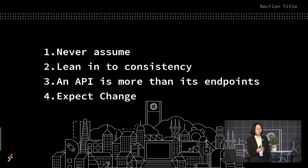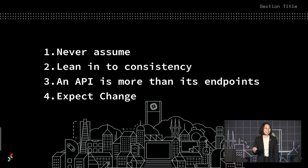In sum, these were the four tips: never assume what developers are doing, lean into consistency, an API is more than its endpoints, and expect change. If you have any questions, you can follow me on Twitter at Cybernetic Love. I'd like to invite Saurabh Sani, one of the co-authors of the book and fellow engineer on the developer platform, up to the stage and open it up for questions from the audience.